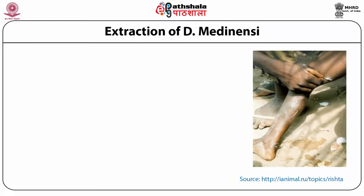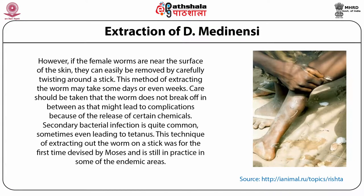If the female worms are near the surface of the skin, they can be removed by carefully twisting around a stick. This method of extracting the worm may take some days or even weeks. Care should be taken that the worm does not break off in between, as that might lead to complications from the release of certain chemicals. Secondary bacterial infection, sometimes even leading to tetanus, is quite common. This technique of extracting the worm on a stick was first devised by Moses and is still in practice in some endemic areas.